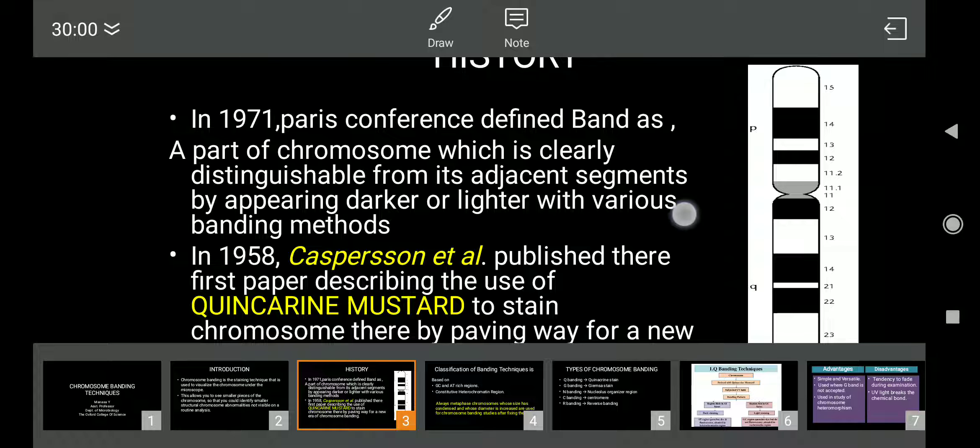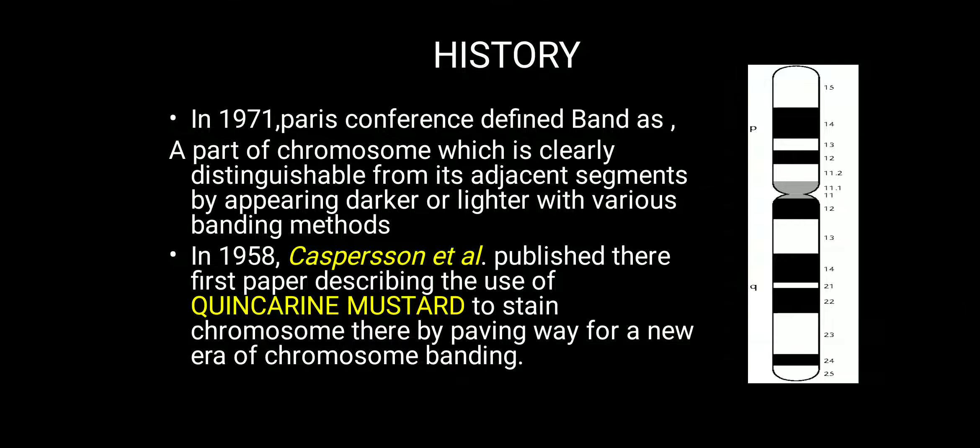In 1958, Caspersson et al. published their first paper describing the use of a stain known as quinacrine mustard. This led to the new era of chromosome banding.